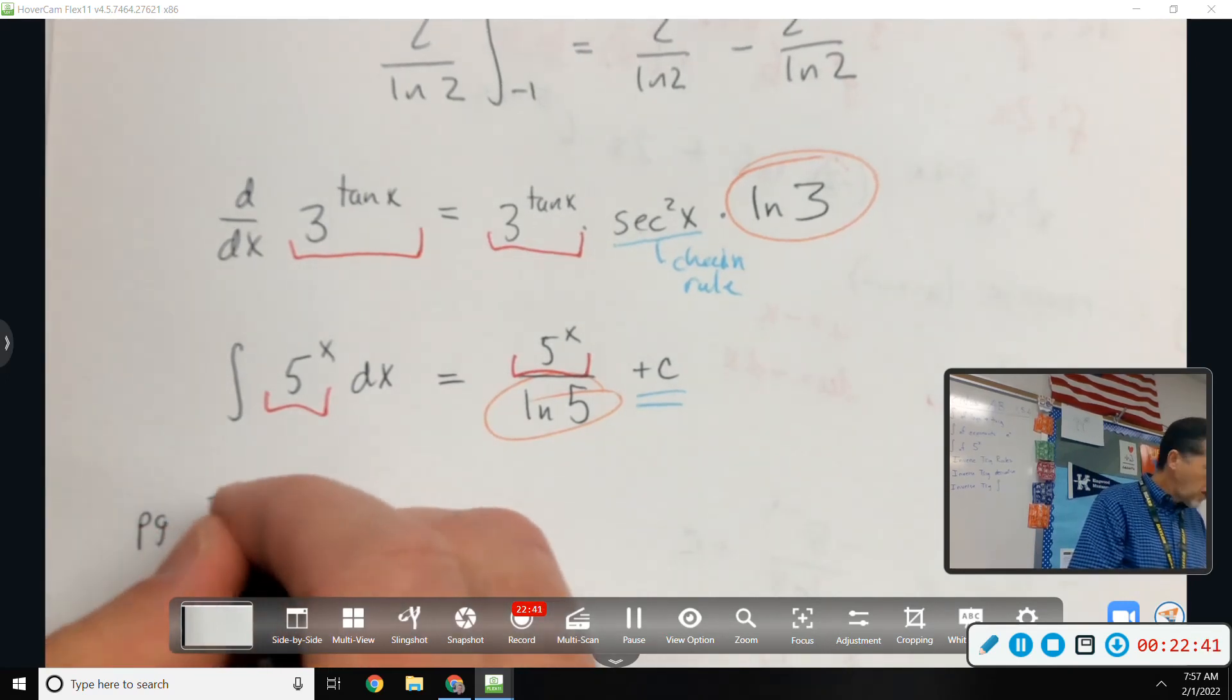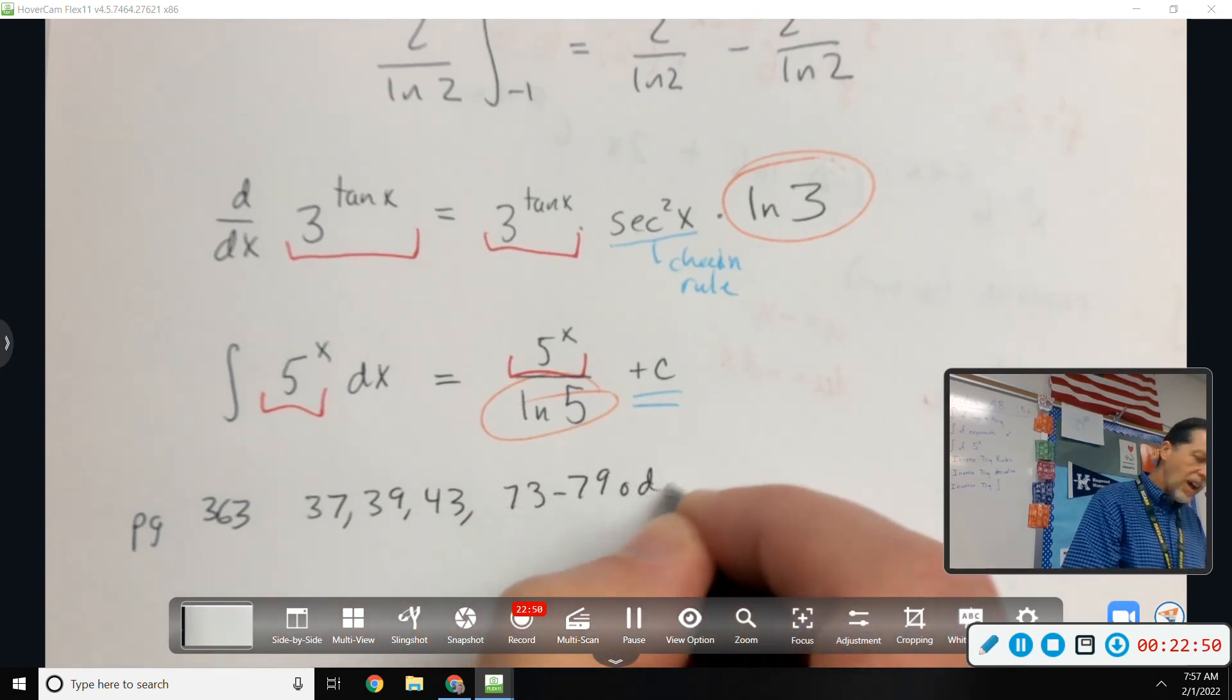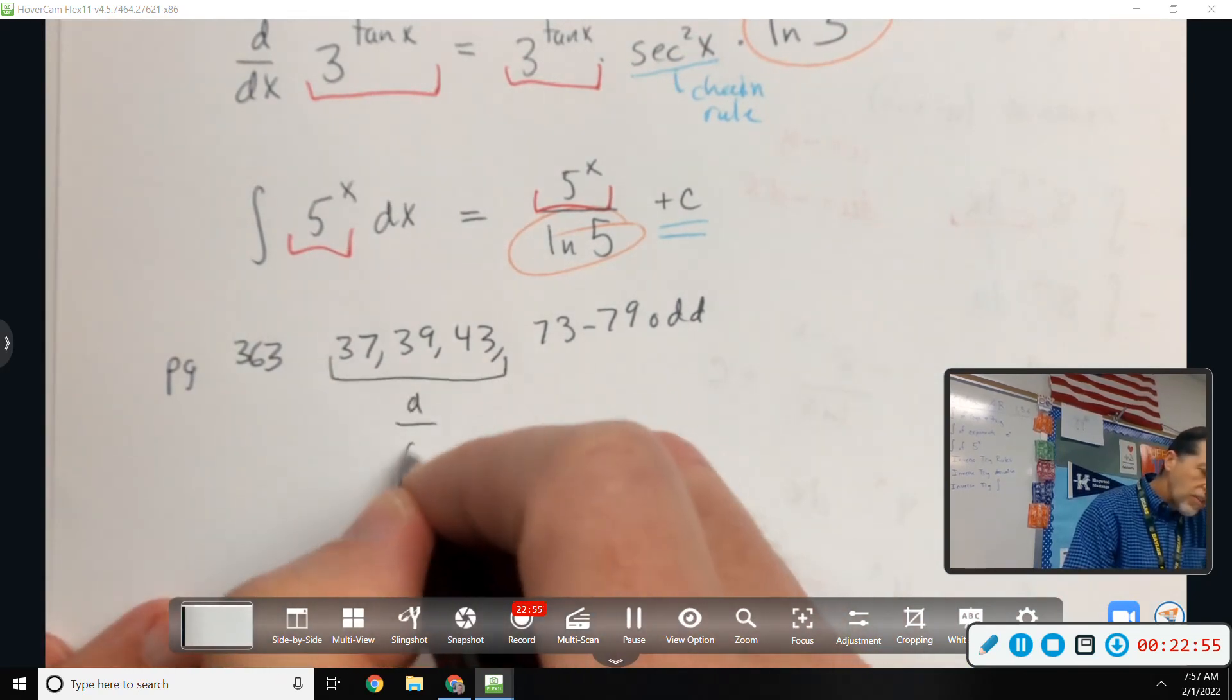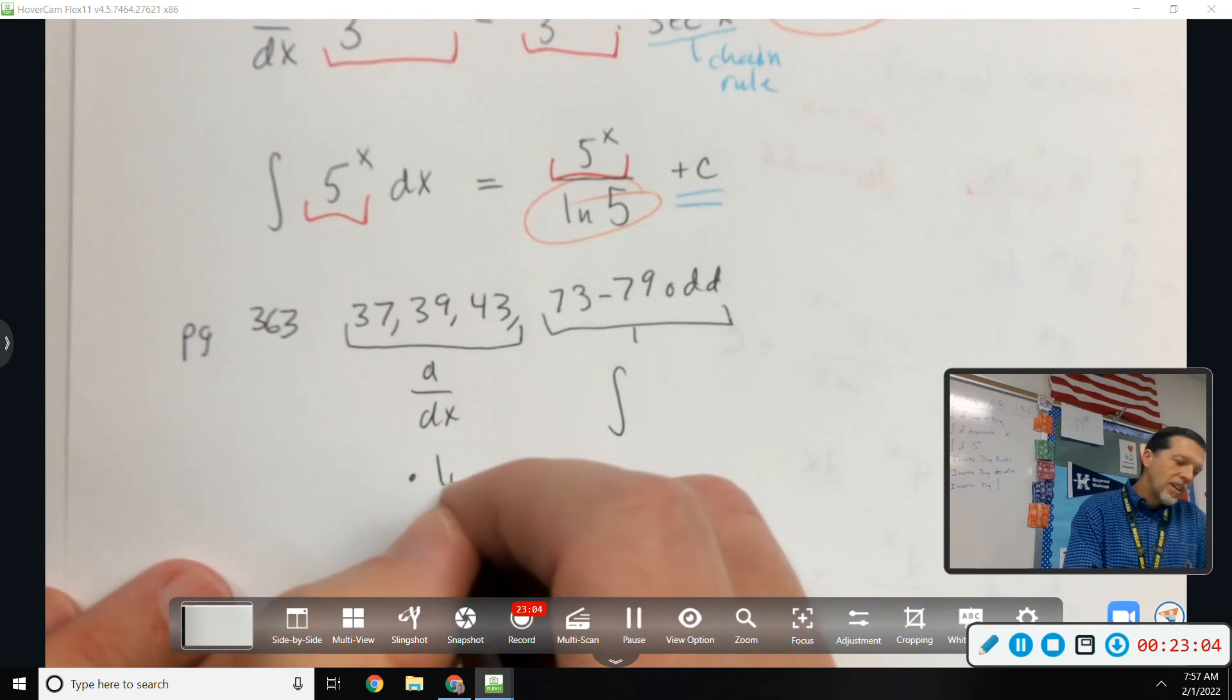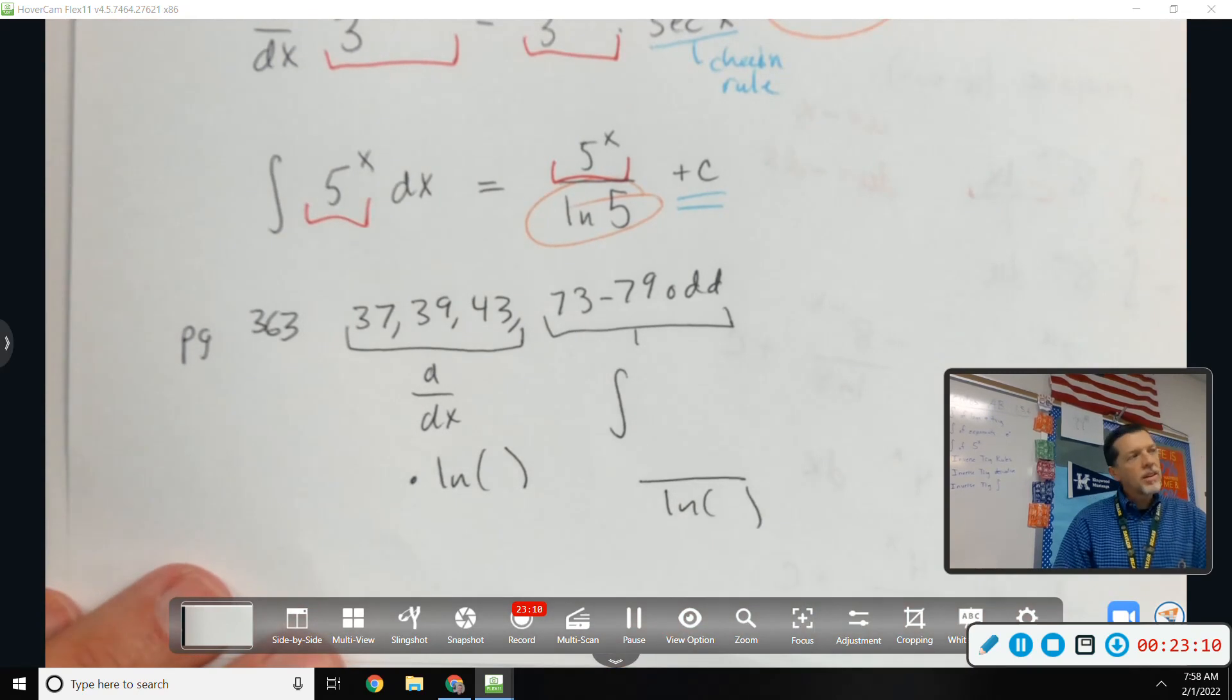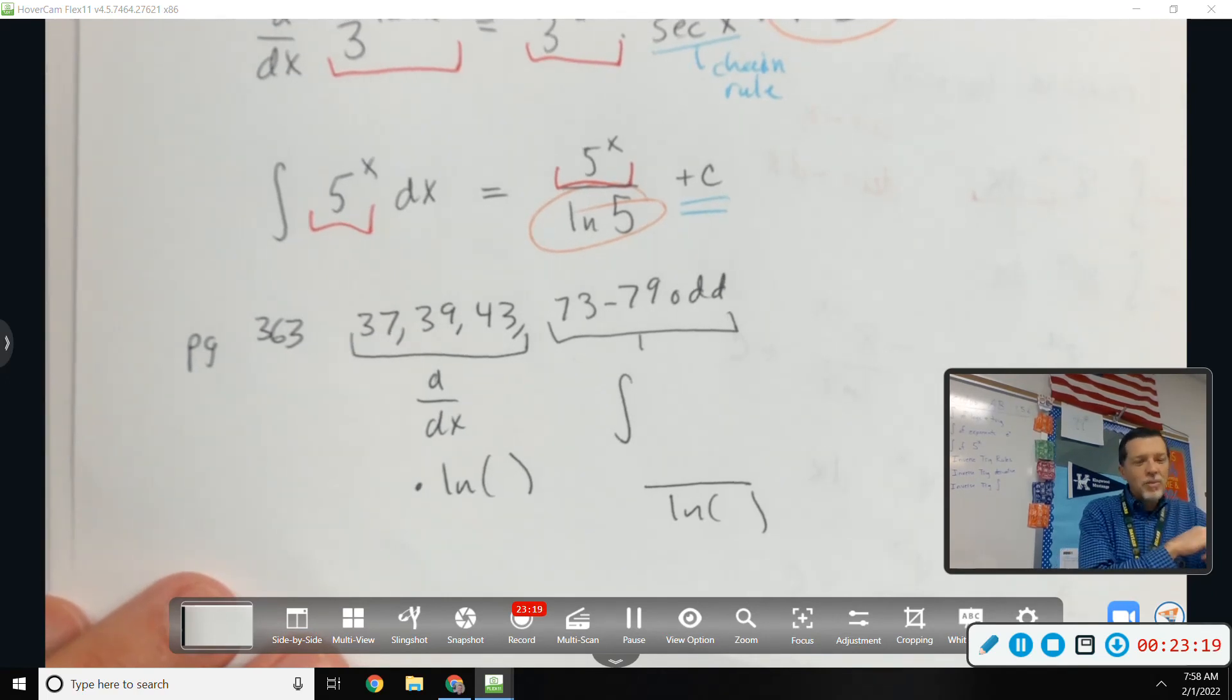All right today's assignment is page 363, problems 37, 39, 43, and 73 to 79 odd. So it's only seven problems I think. The first three are derivatives, the last four are integrals. So the first three are going to have times natural log of something and the last four will have divided by a natural log of something. I put yesterday's assignment in yesterday's folder. Apologies for not having that book work posted and I'll have this book work posted in just a minute.